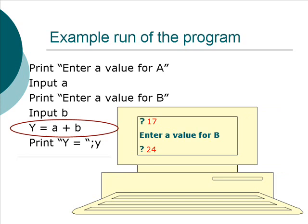Then the computer executes the next instruction: Y is equal to A plus B. It gets the value for A, which was 17, then it gets the value for B, which was 24, and it adds those two numbers together and stores that in a variable called Y. So Y now contains the number 41 after this instruction is executed.